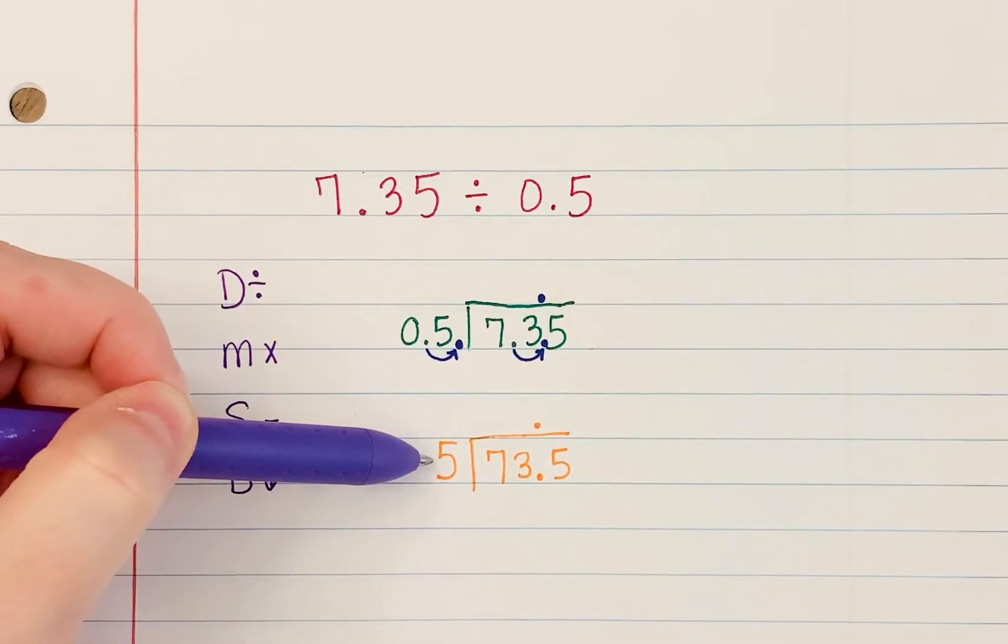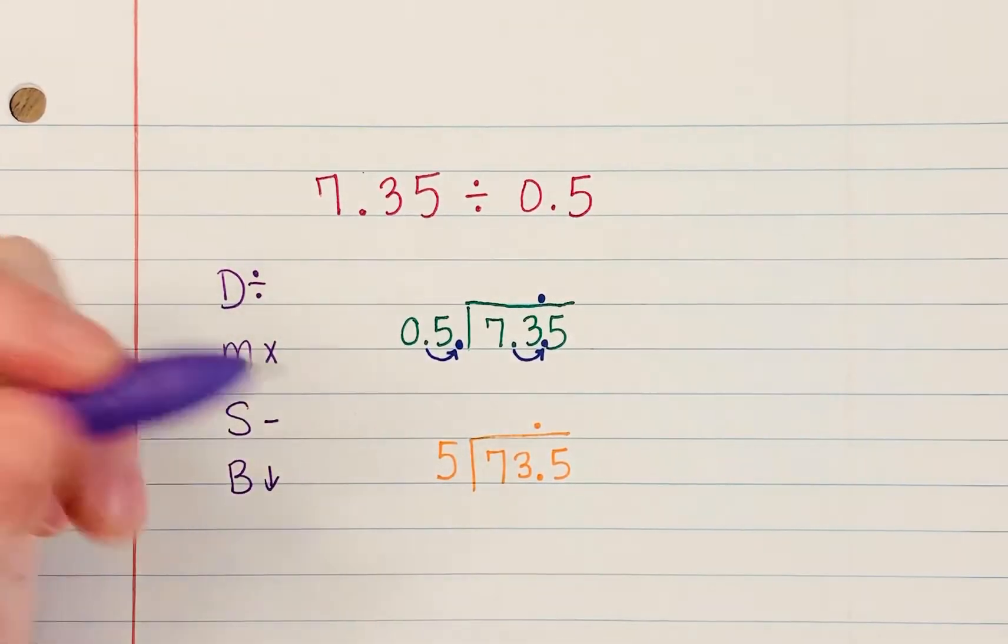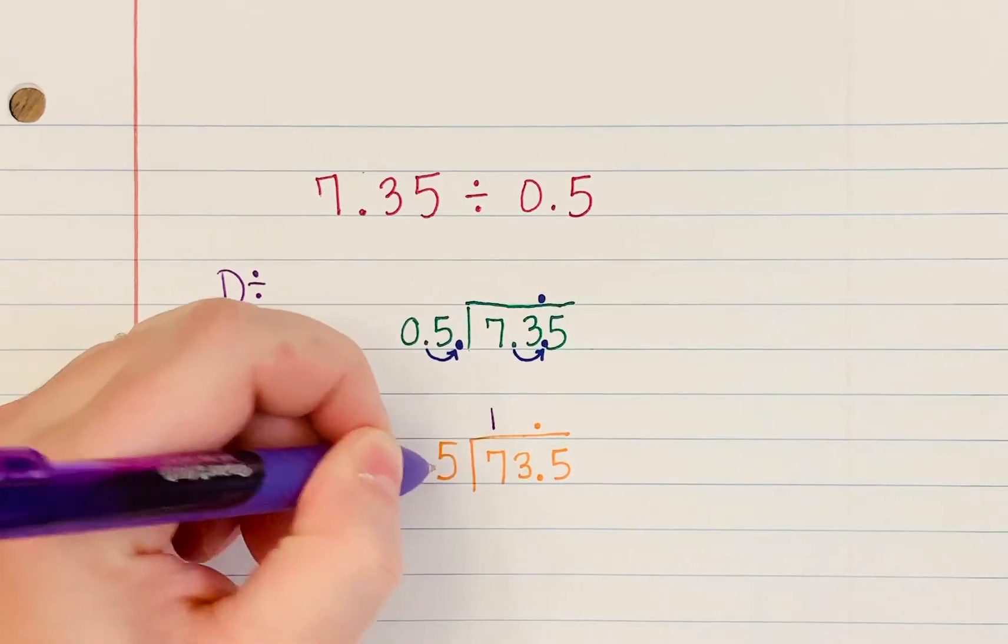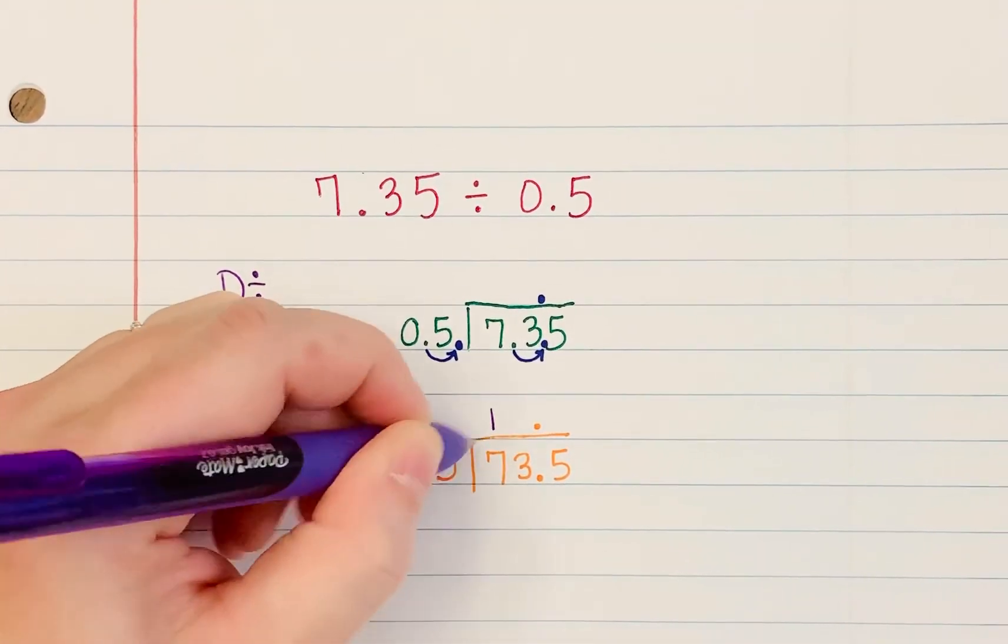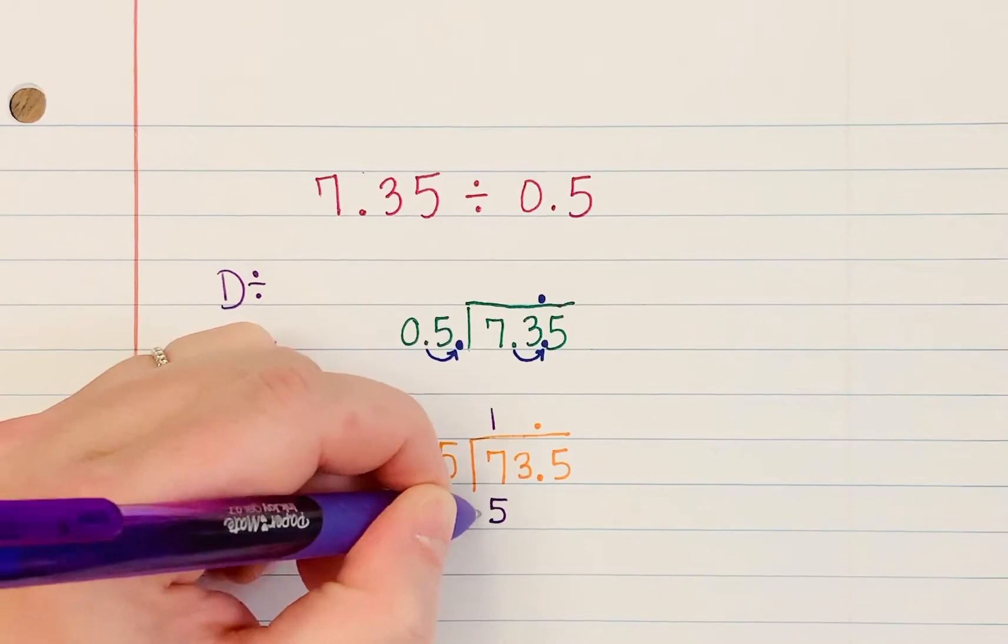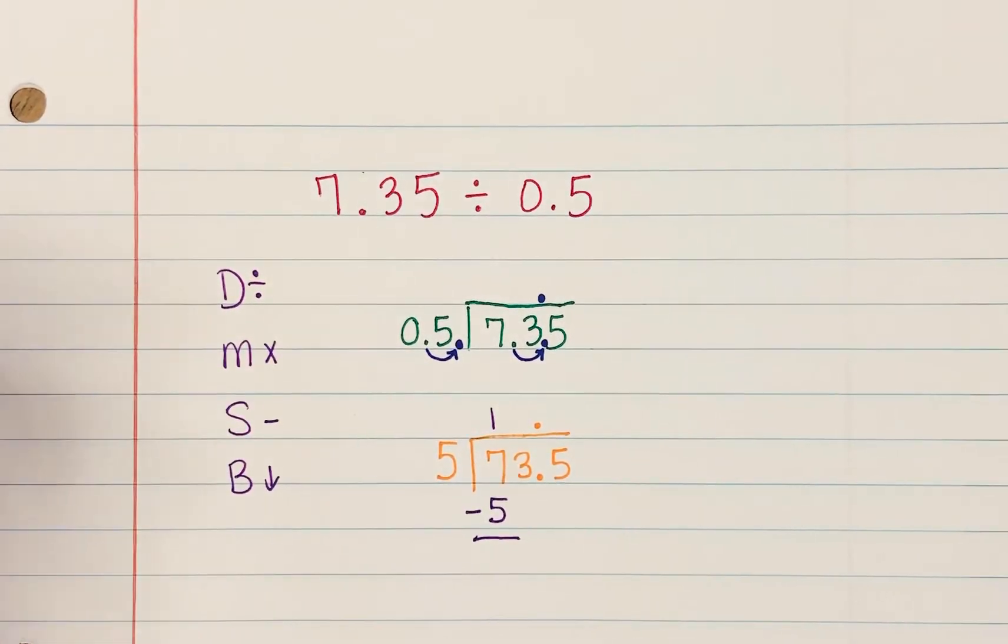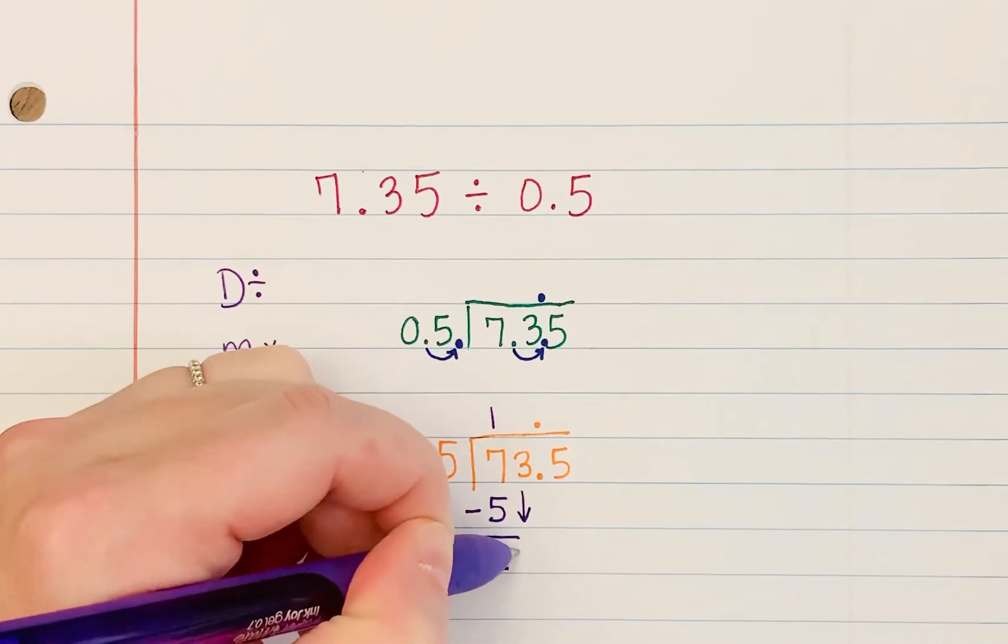We want to see how many times five goes into seven and it goes in one time. Then we multiply. Five times one is five. Then we subtract. Seven minus five is two. And then we bring down, we bring down this three.